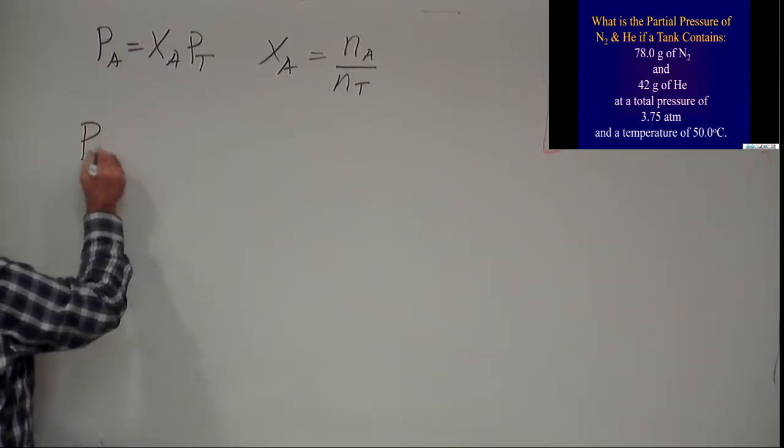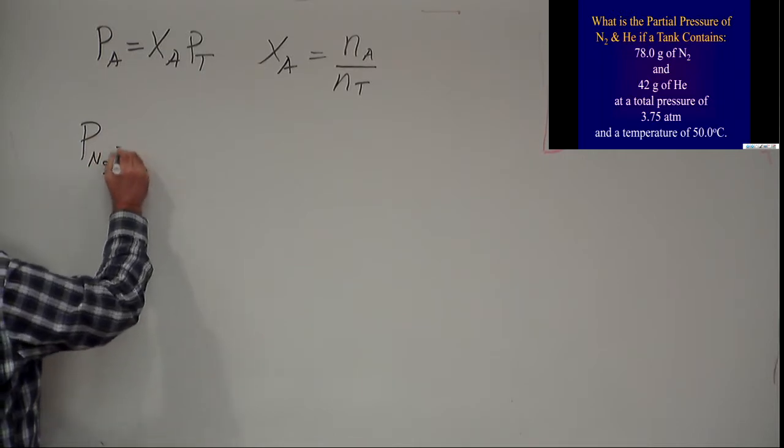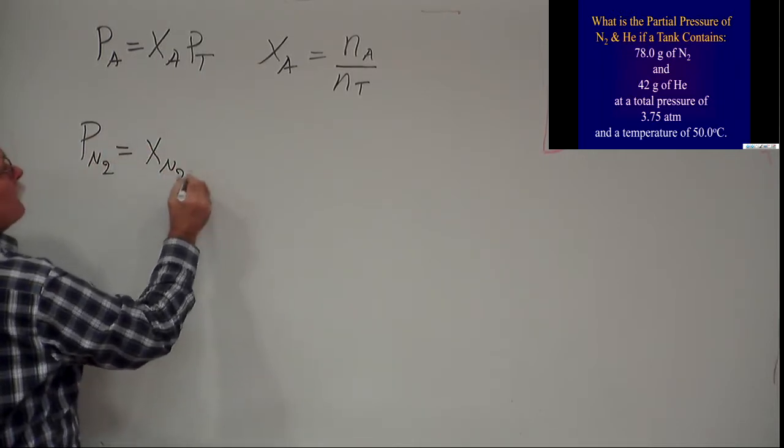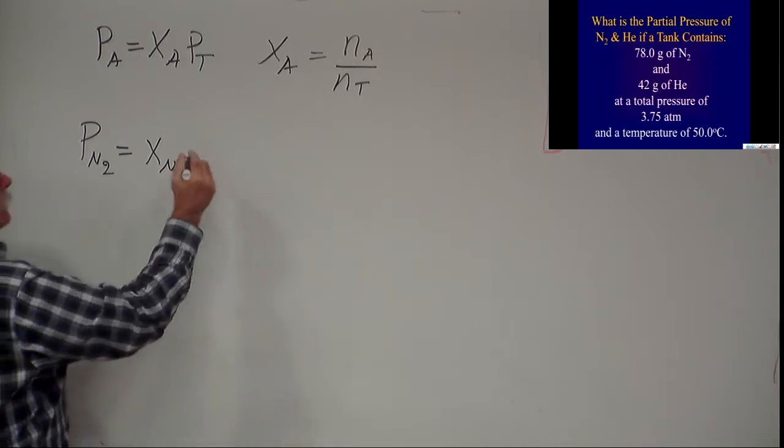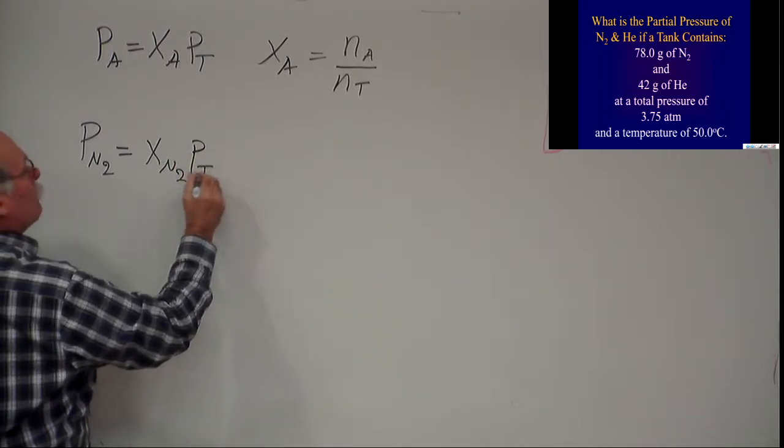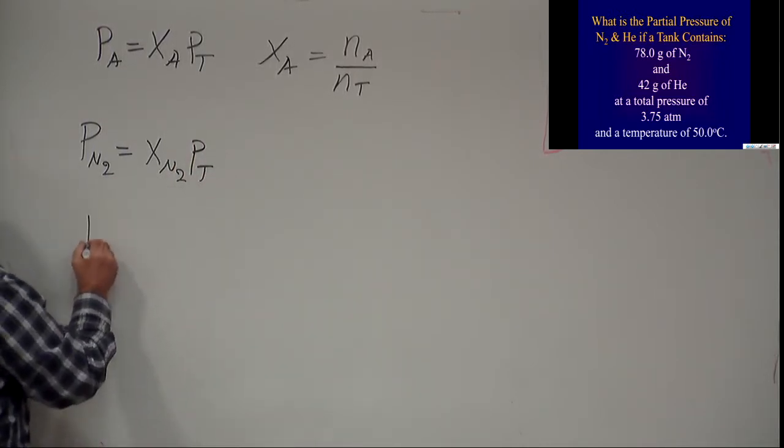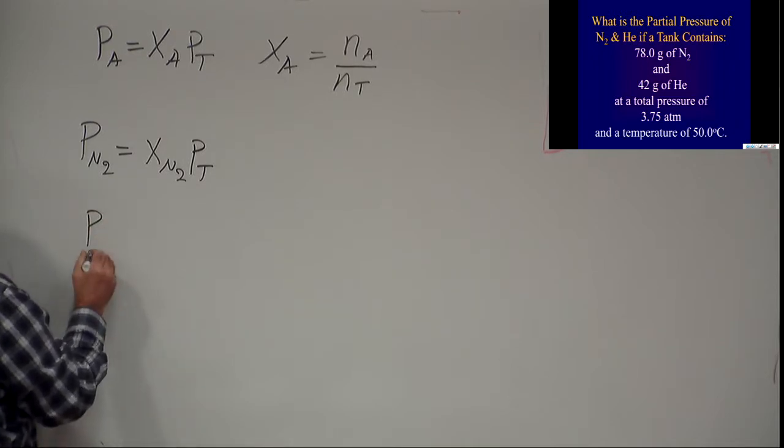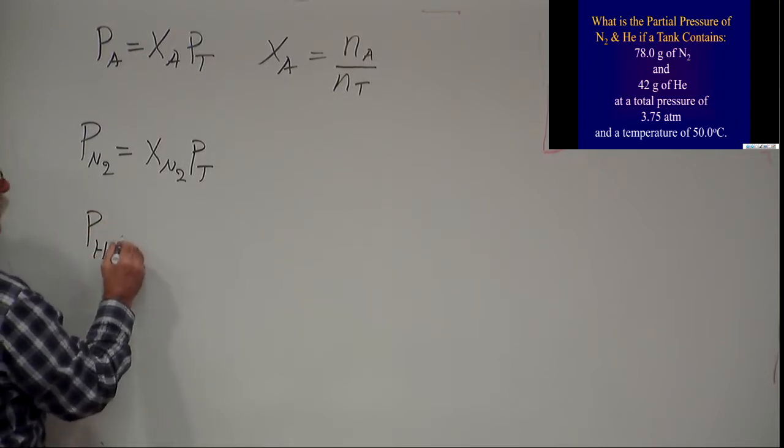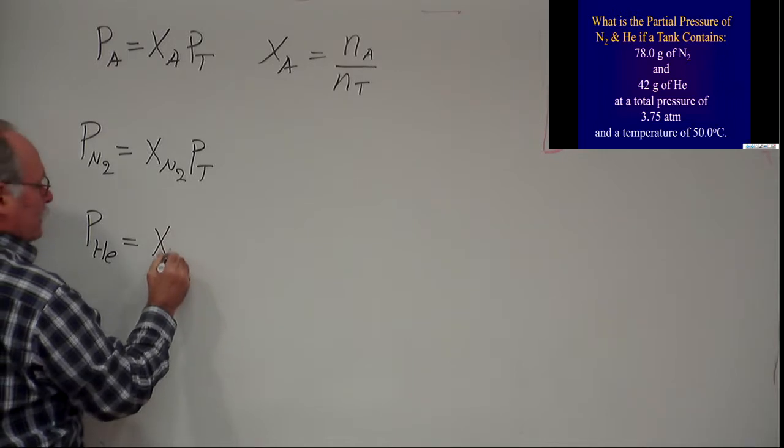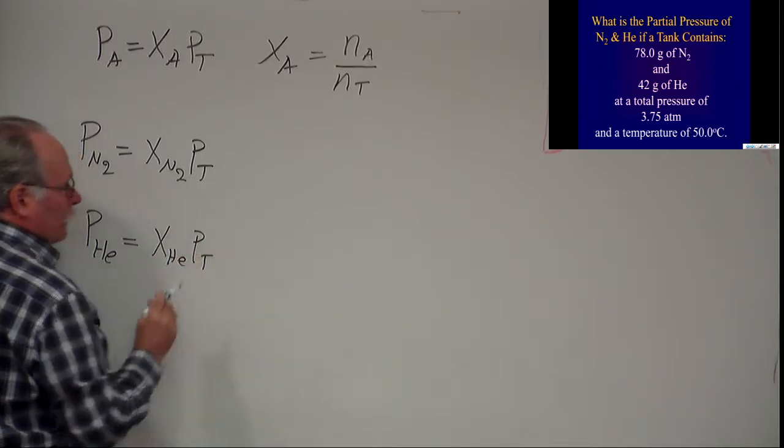The first equation will be the partial pressure of nitrogen, which equals the mole fraction of nitrogen, the fraction of total molecules that are nitrogen, times the total pressure. The second equation is the partial pressure of helium, which equals the mole fraction of helium times the total pressure.